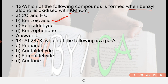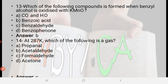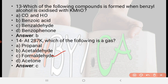Next: At 287 K, which of the following is a gas? Option A: propanol, option B: acetaldehyde, option C: formaldehyde, option D: acetone. The right answer is option C, formaldehyde. At 287 K, formaldehyde is a gas.